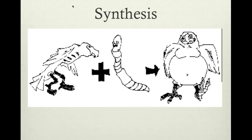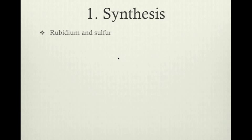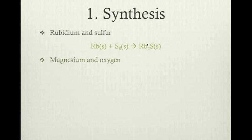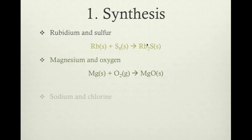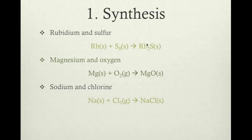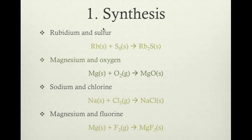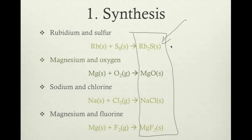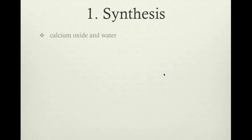Here's a visual example: a bird eats a worm and becomes one thing. Looking at chemicals: rubidium and sulfur combine to make rubidium sulfide; magnesium and oxygen combine to make magnesium oxide; sodium and chlorine synthesize to make sodium chloride; magnesium and fluorine synthesize to make magnesium fluoride. When we have two elements, they combine and synthesize into one product.